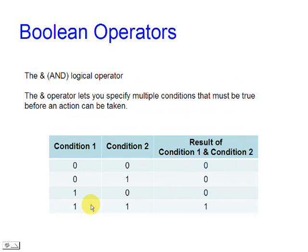The AND operator lets you specify multiple conditions that must be true before an action can be taken. The result is true only if both conditions are true, otherwise the result is false.